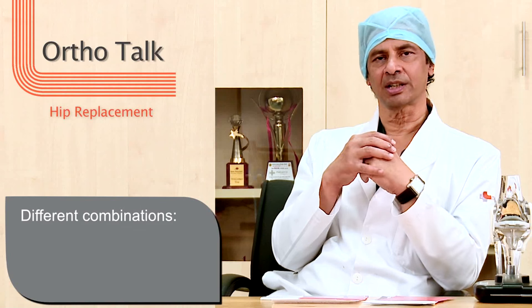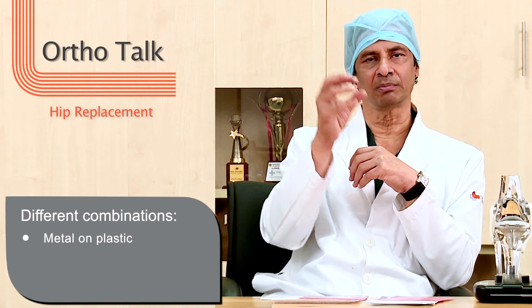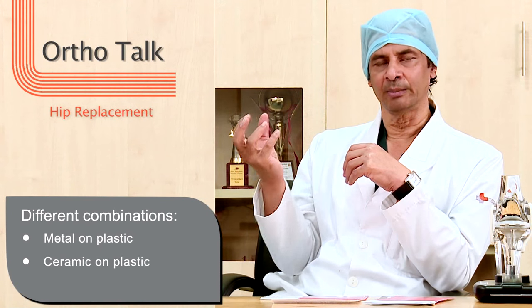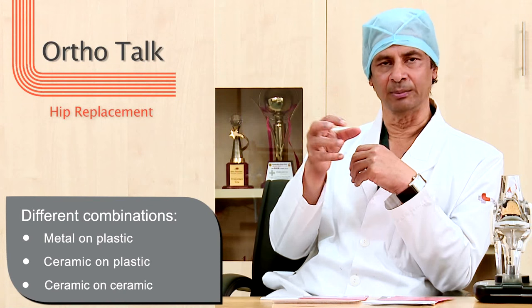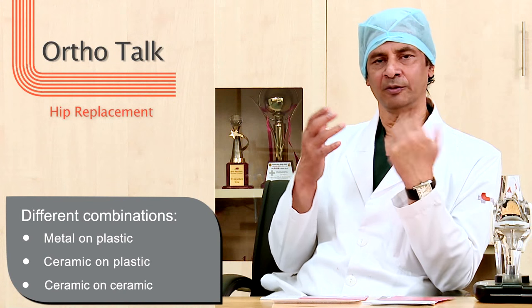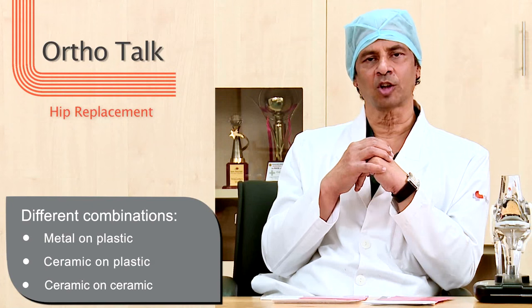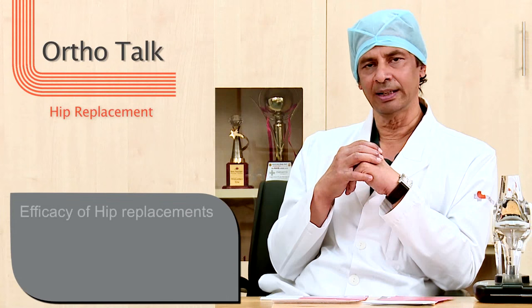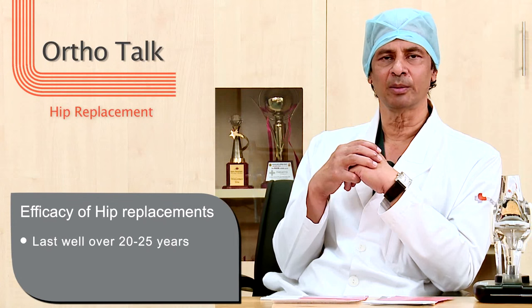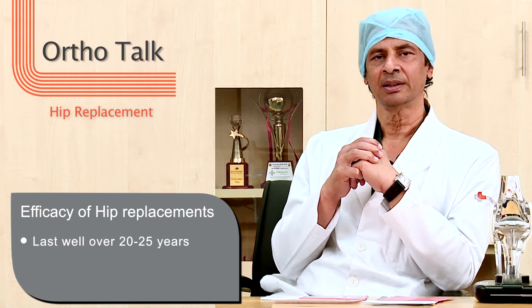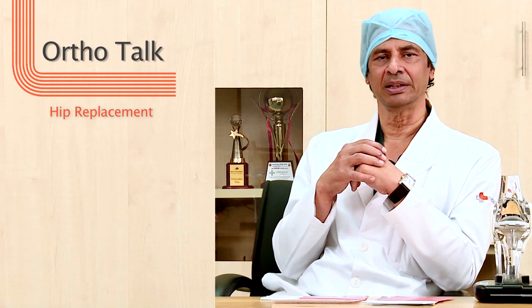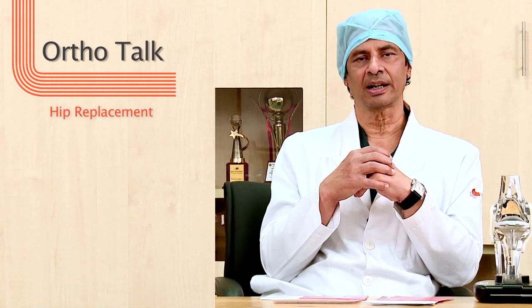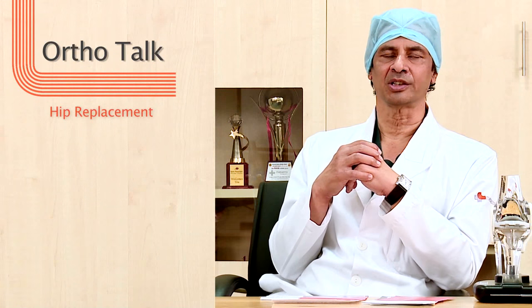Various combinations are used: you can have a metal on plastic, ceramic on plastic, or ceramic on ceramic type of implant. A few years ago there was a lot of talk about metal-on-metal implants, but that fell into disrepute and currently metal-on-metal implants are not used. Hip replacements work very well over an extended period of time — they will usually last anywhere between 20 to 25 years, and in the event that there is a problem at the end of that period, these can be revised, and you can have excellent outcomes from revision hip surgery as well.